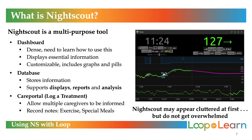The second piece of NightScout is the database, which stores your data like your blood glucose values, treatments, overrides, exercise, etc. The database displays your uploaded information so that multiple people or caregivers can view and update that information on the web. The third piece is the Care Portal, which is an area of NightScout where you can manually enter various activities like meal descriptions or notes, exercise, temp targets, and low corrections.